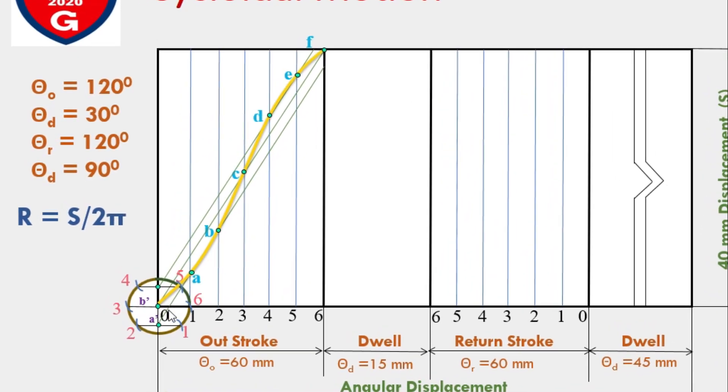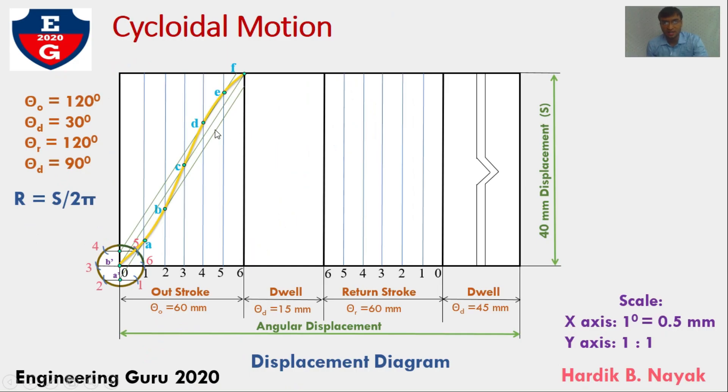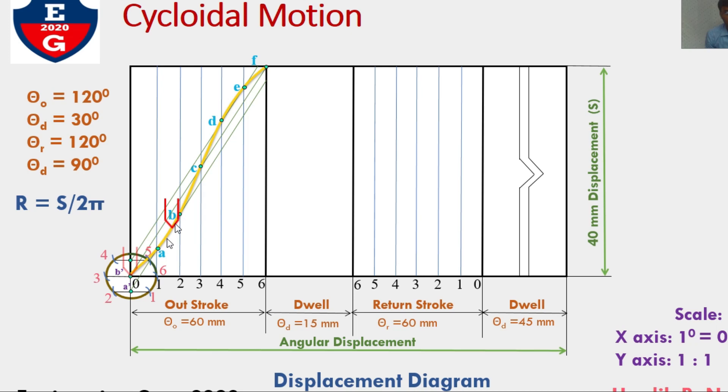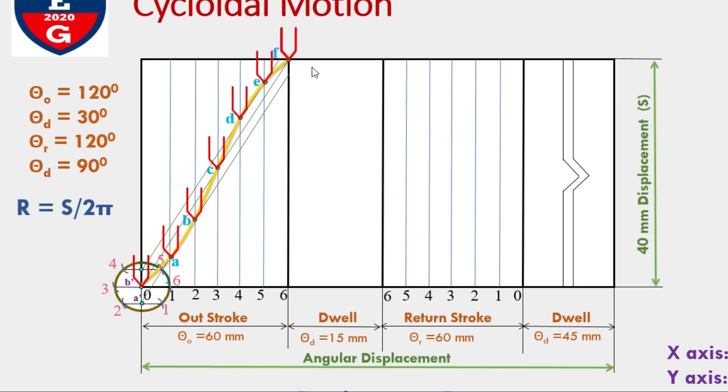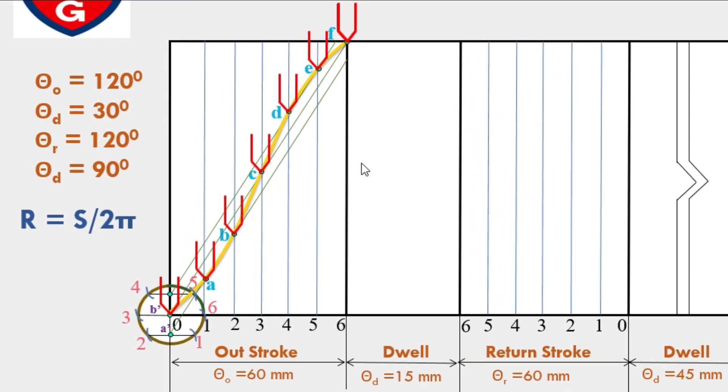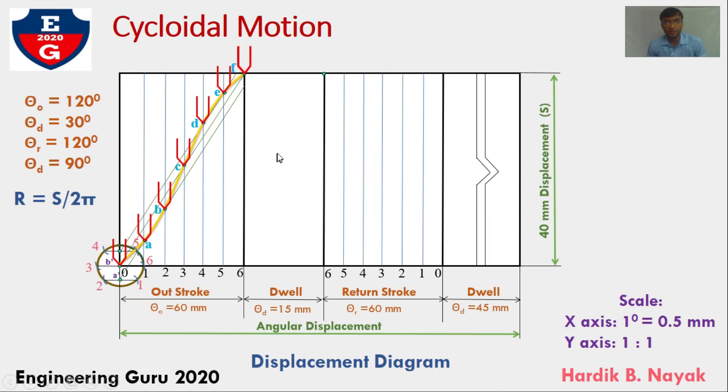So after getting all points I will be connecting them with the help of smooth curve from point 0 A B C D E and F, and this curve indicate cycloidal motion during outstroke. To explain it, I'm assuming a knife-edge follower, and first the follower will be at bottom most position that is point 0, then it take next position at A then B C D E and F, and reaching maximum height in this way. This point show increasing order of the follower when cam rotate. This is cycloidal motion for outstroke.